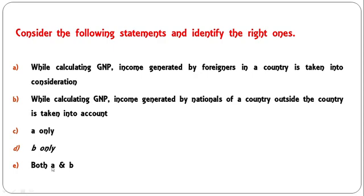Consider the following statements and identify the right ones. While calculating GNP, income generated by nationals of a country outside the country is taken into consideration — A only, B only, or both A and B? The correct answer is B only. Income generated by nationals abroad is included in GNP. So D — B only — is the correct answer.